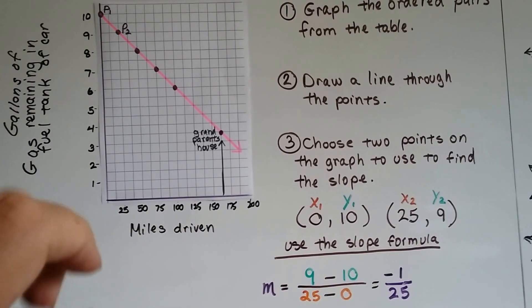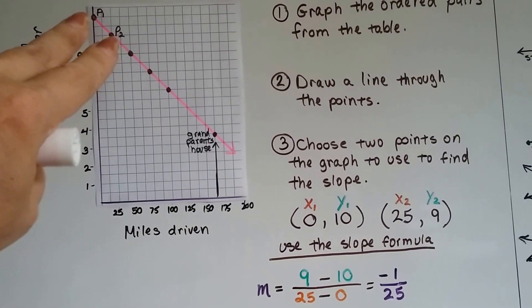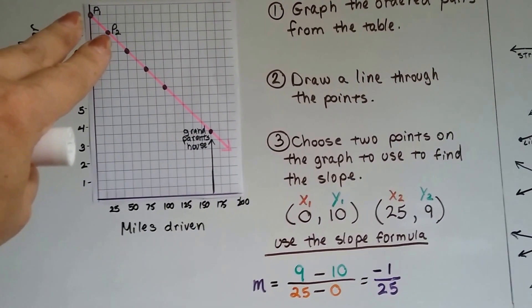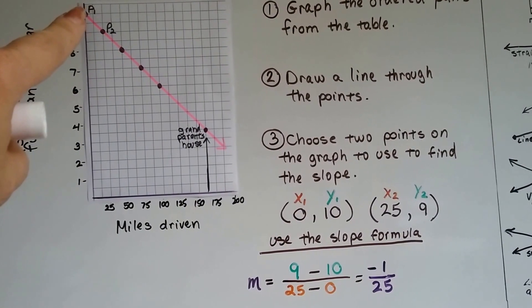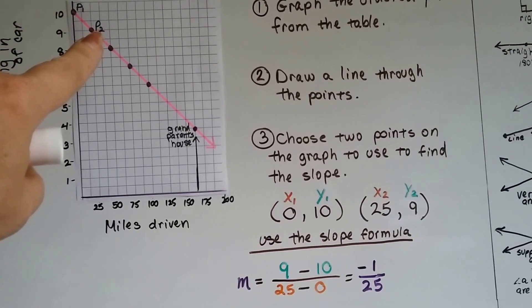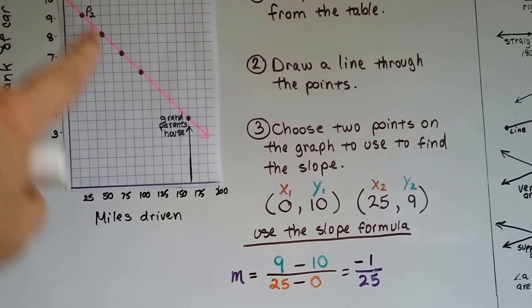We choose two points on the graph, so I chose the first two, to find the slope. Remember, we choose left to right. So that's the first one, x1 and y1, and that's x2 and y2. We always go left to right.